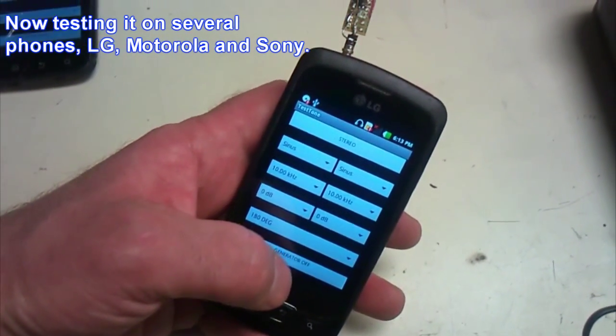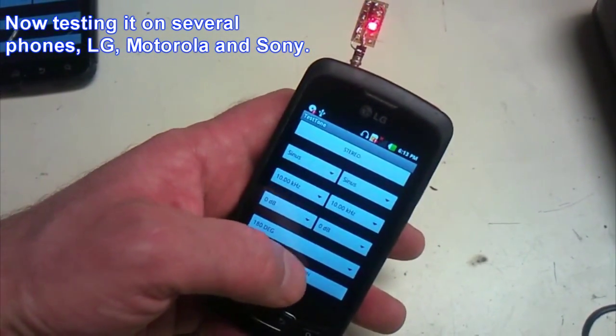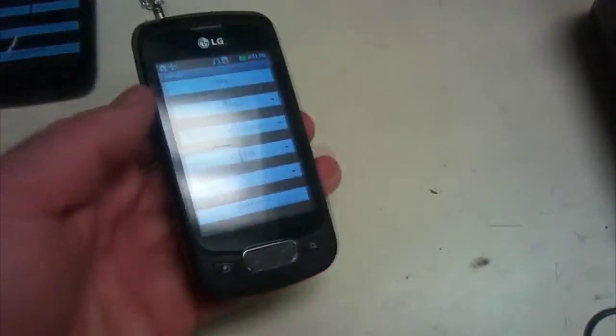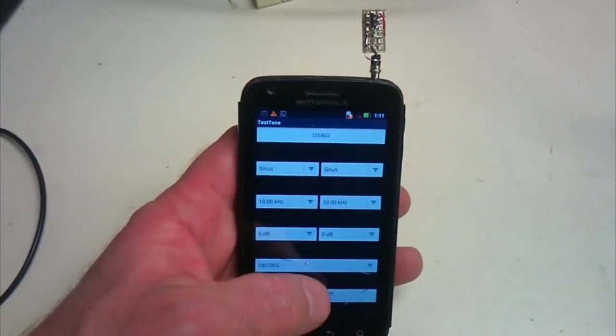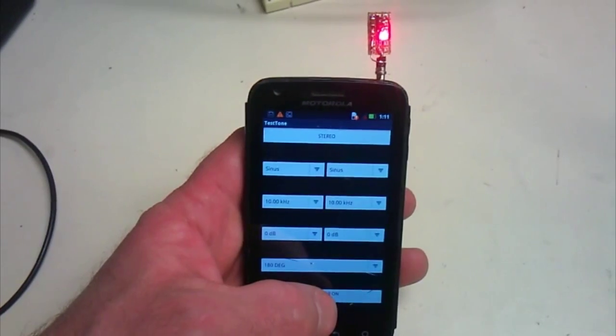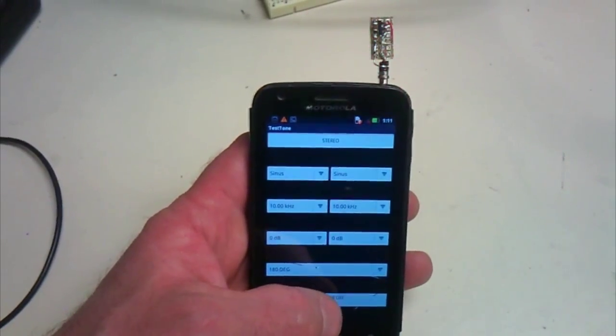First, this one here is an old LG with pretty low output voltage. It works okay. Then a Motorola Atrix, which is pretty powerful. And the same goes for the next one, a Moto G.